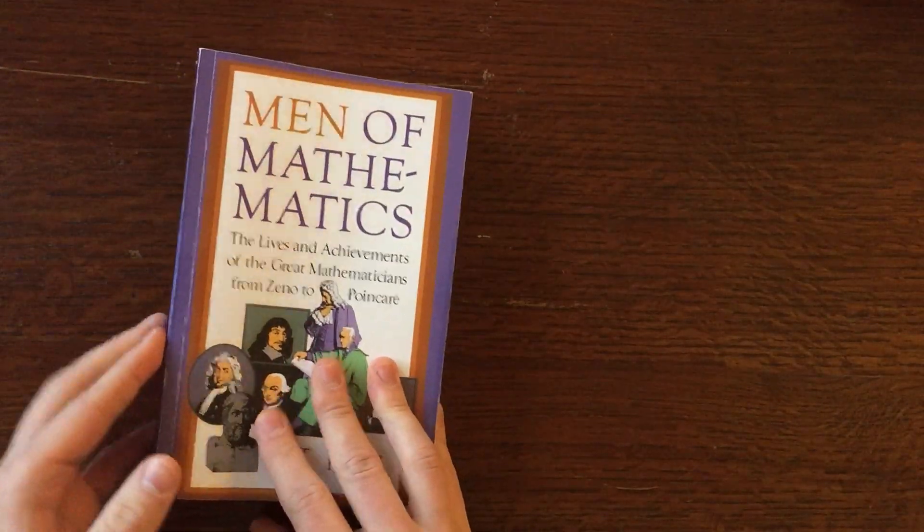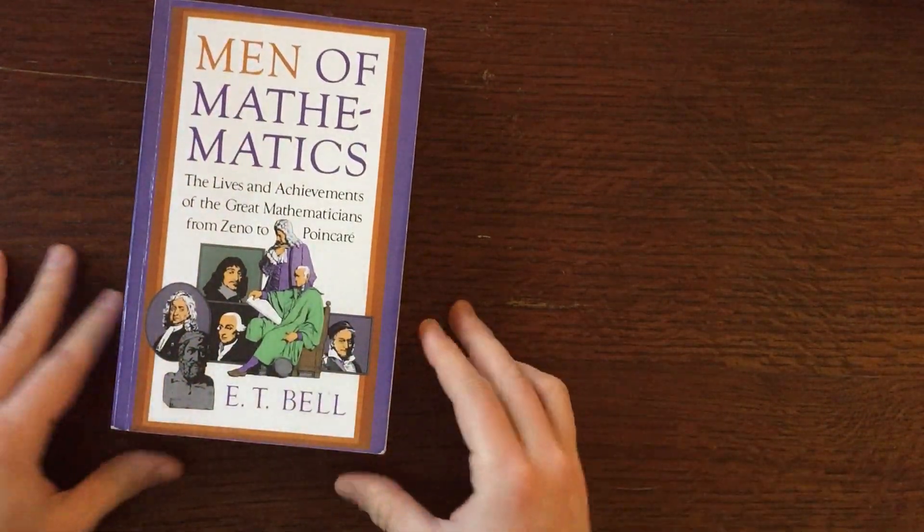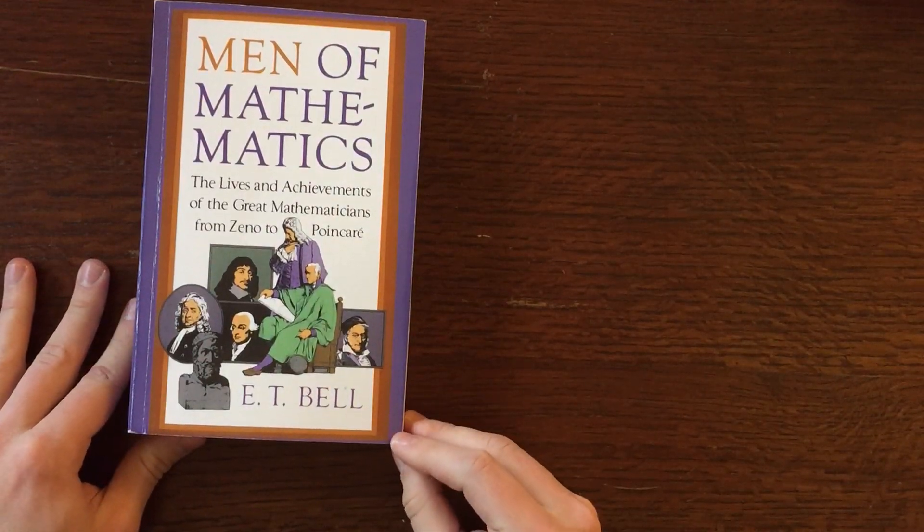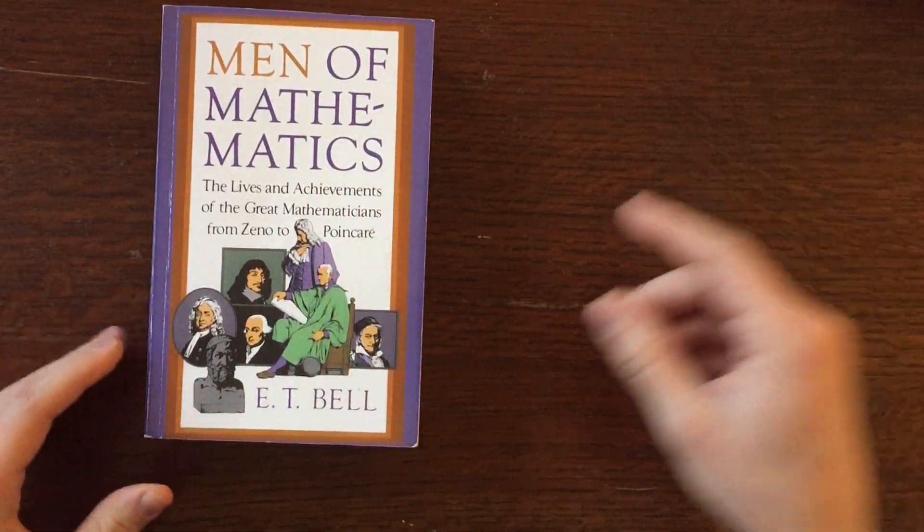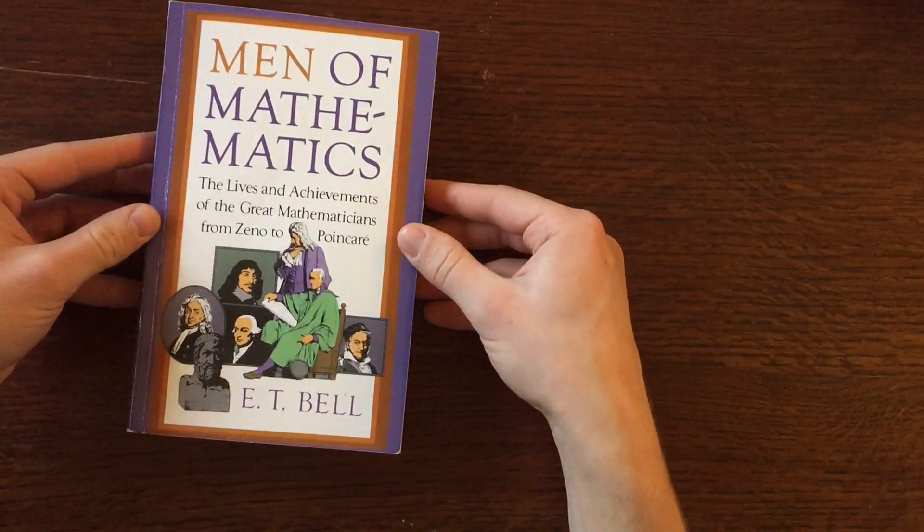It's not an expensive book. It's a paperback. You can get it on Amazon for probably maybe 20 bucks new, 10 bucks used if I had to guess. I'll throw a link in the description if you're interested in checking this one out a little bit more.